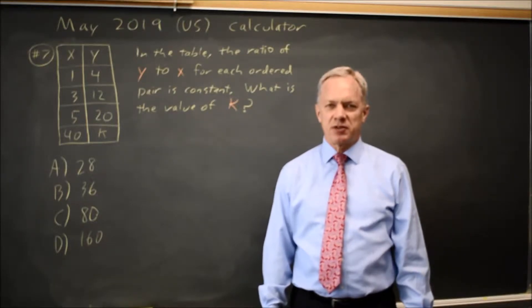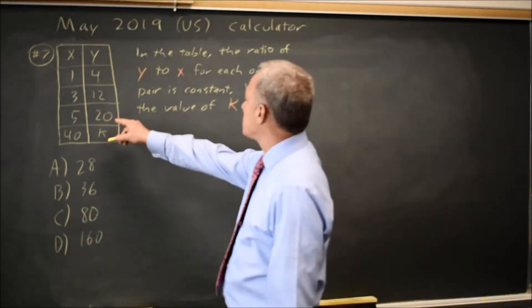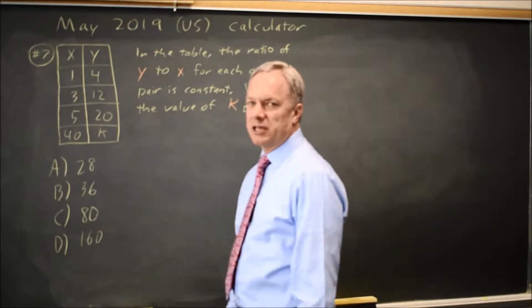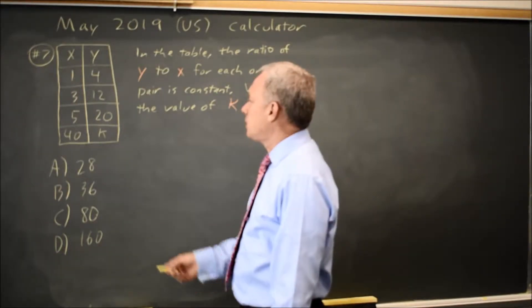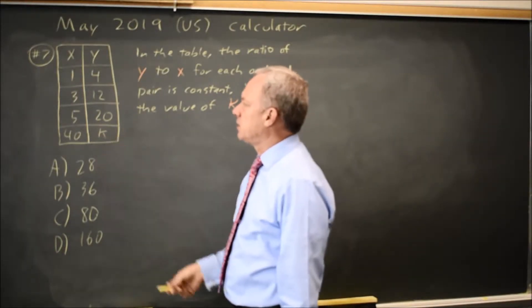This is calculator question number 7. College Board gives us a table of values, and they tell us the ratio of y to x is constant for each pair, and they ask for the value of k in this last pair.